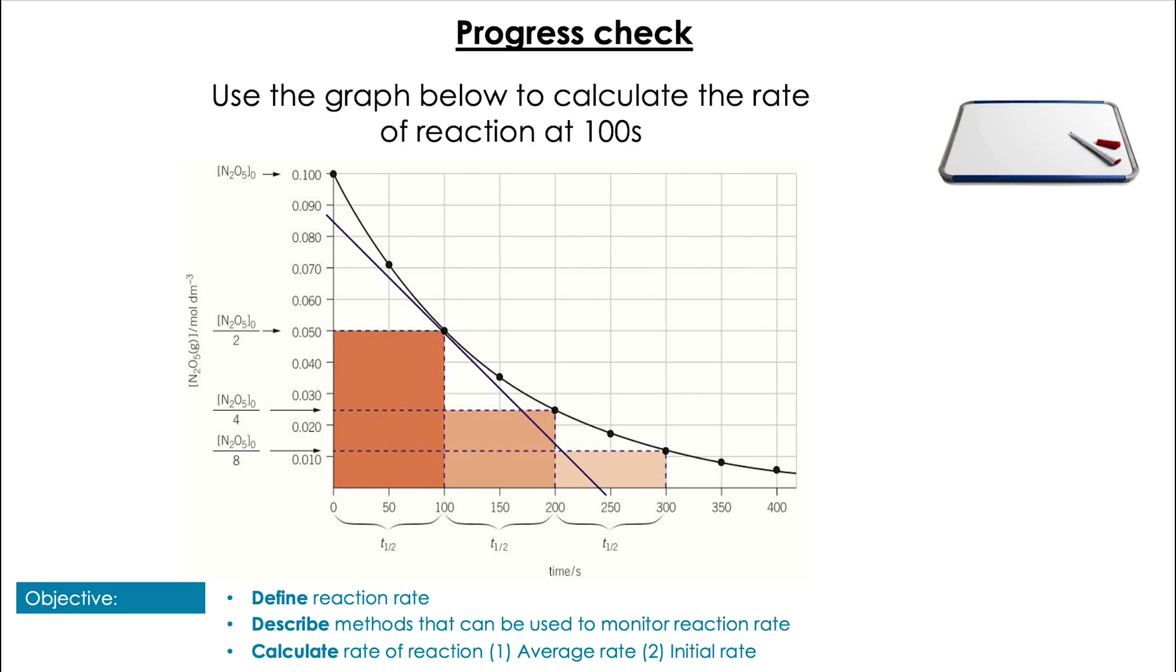Last question. Use this graph to calculate the rate at 100 seconds. Pause the video. Pop them up! Here you already have the gradient drawn for you. You just need to find the gradient of that line, which is the change in concentration over the change in time. 0.085 over 240 equals 3.54 times 10 to the minus 4 moles per decimeter cubed per second.